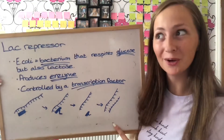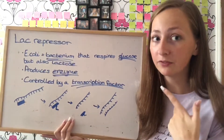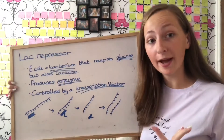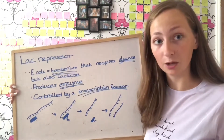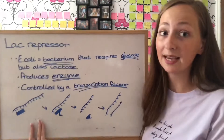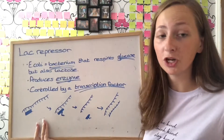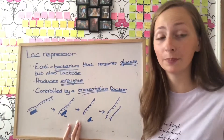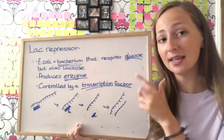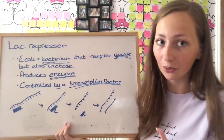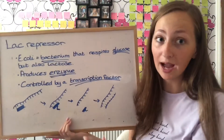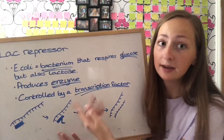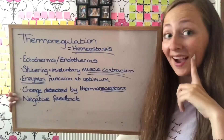The lac repressor — I got this from the CGP textbook. E. coli is a bacterium that can respire glucose, giving links to respiration and glucose. When glucose is not available it can respire lactose, but to do so it must produce the enzyme beta-galactosidase. This enzyme is only produced when required, to save energy, so it's only made when lactose is present. This is controlled by a transcription factor: the lac repressor binds to the DNA so the gene cannot be transcribed and the enzyme isn't produced. When lactose is present, lactose binds to the lac repressor, preventing it from binding to DNA, so transcription occurs and the enzyme is produced.